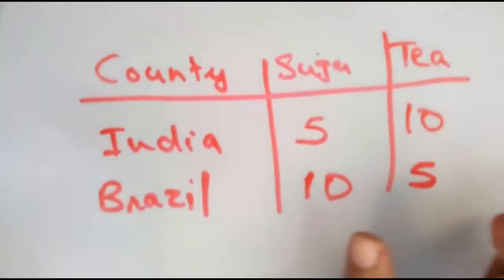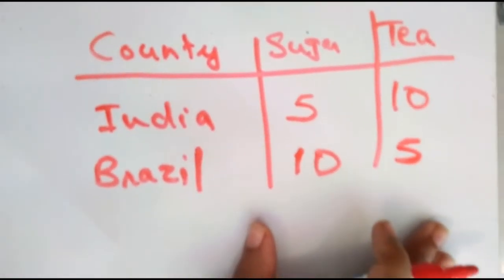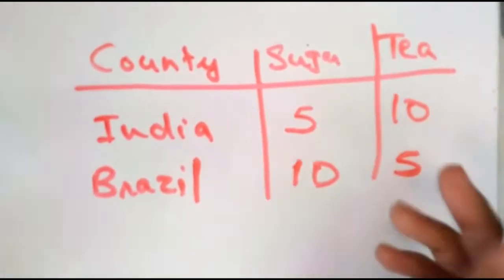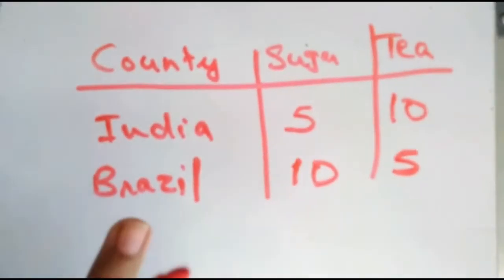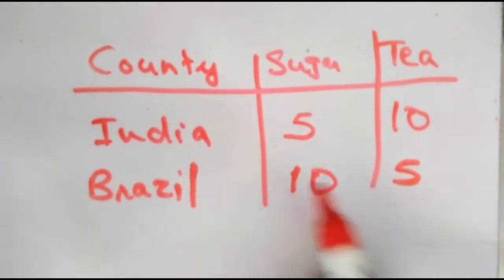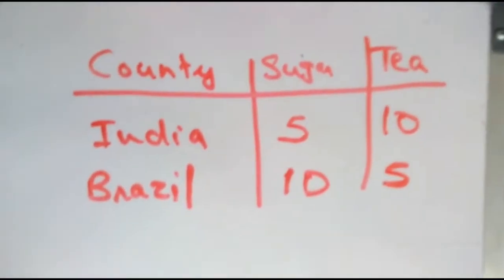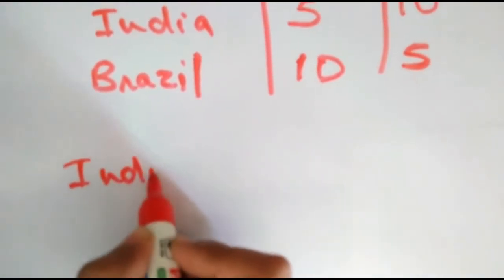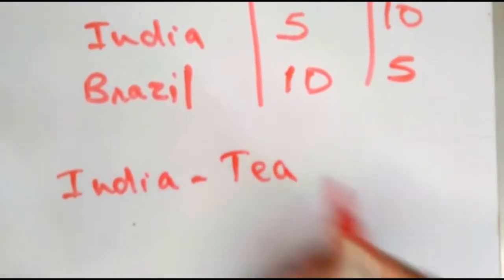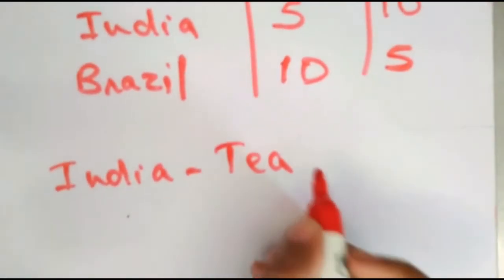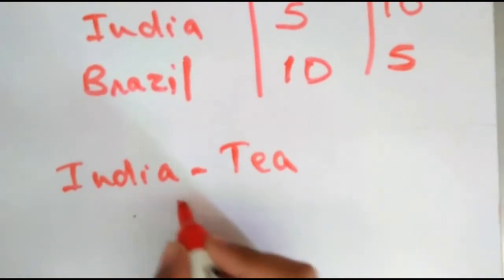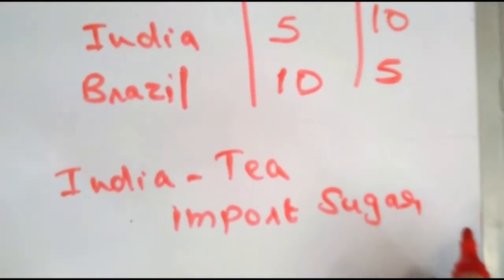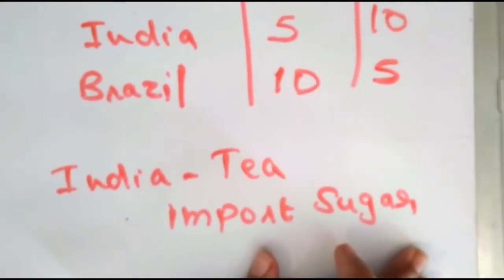From this example, it is clearly seen that India is more efficient in producing tea than sugar, and Brazil is more efficient in producing sugar rather than tea. According to absolute advantage theory, India should produce tea — as it is more efficiently produced in India — and import sugar from Brazil.